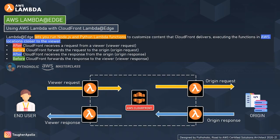The third trigger point is origin response — this is an incoming response from the origin. It triggers the Lambda code after CloudFront receives the response from the origin. The function executes even if there are errors returned from the origin. It does not execute in two cases: when the requested file is in the CloudFront cache and not expired, or when the response is generated from a function triggered by an origin request event.